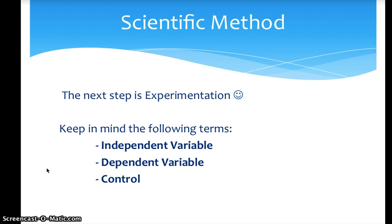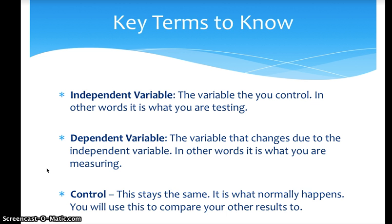The next step in the scientific method is experimentation — this is the part that everybody enjoys. Keep in mind the following terms: independent variable, dependent variable, and your control. The independent variable is the variable that you control, often referred to as the manipulated variable. Independent and manipulated variable mean the same thing — it just depends on what term is used. I use independent variable, but the state test may use manipulated variable.